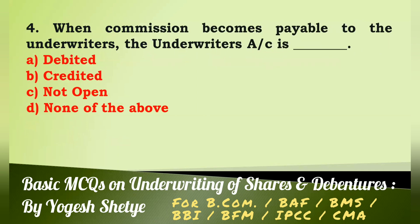Question 4: When commission becomes payable to the underwriters, the underwriters account is — (a) debited, (b) credited, (c) not opened, (d) none of the above. Answer: When commission becomes payable to the underwriters, the underwriters account is credited. Answer B.